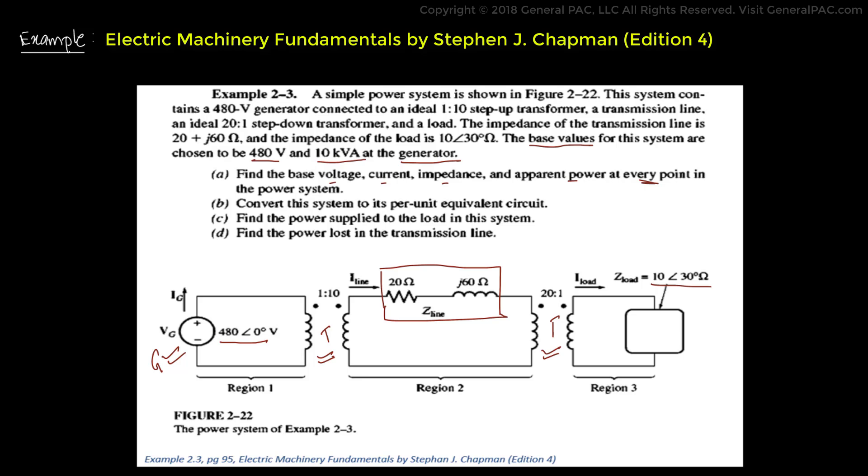And part B is to convert the system into per unit equivalent. Part C, find the power supply to the load in the system. And part D, find the power lost in the transmission line.